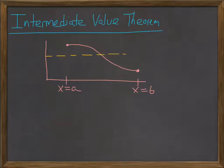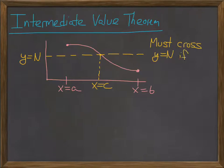...then it has to cross any given horizontal line that's between f of A and f of B, and we call that point C. So if the function is continuous and it goes from some high point to some low point, it must cross every point in between. If it's not continuous, Intermediate Value Theorem doesn't apply.